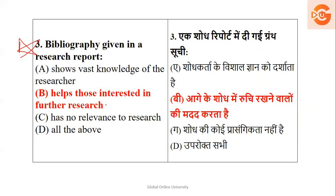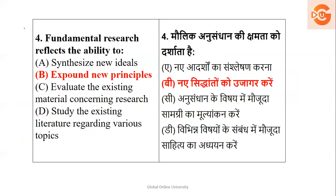Next: what does bibliography given in a research report represent? Options include fast knowledge, helps those interested in further research, has no relevance, or all of the above. Options C and D are definitely not correct. Bibliography is basically given for those people who are interested in going for further research, either on the same topic or any other topic. Bibliography and references are used by researchers to facilitate further research.